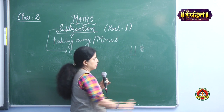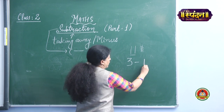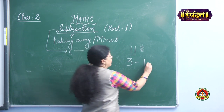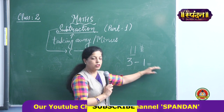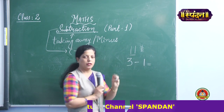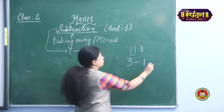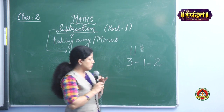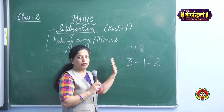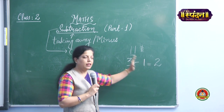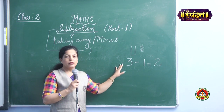The answer which we get — suppose three chalks were there, I used one out of them. The answer is the number which is left. Out of three chalks, one is being used, so I am left with two chalks. This is the way we are simplifying subtraction questions in a horizontal way, from left to right. This is one way of solving subtraction.